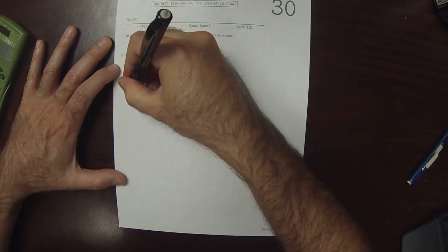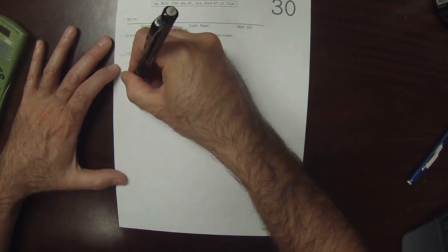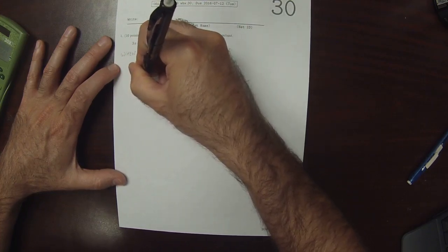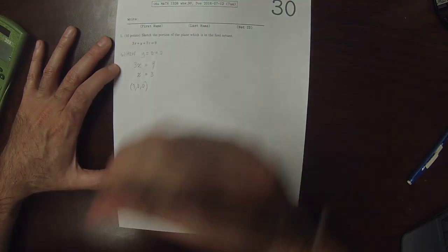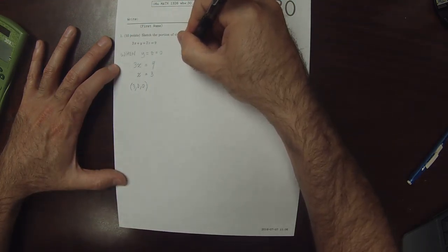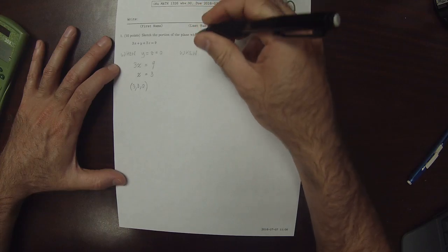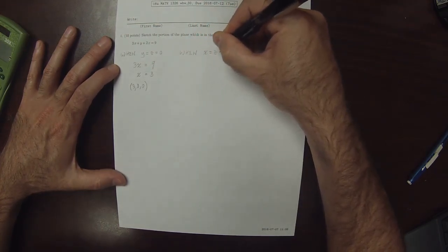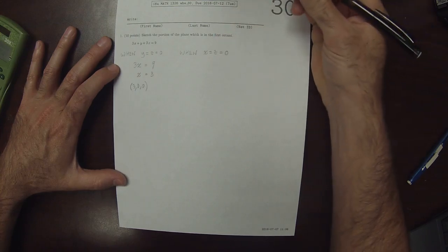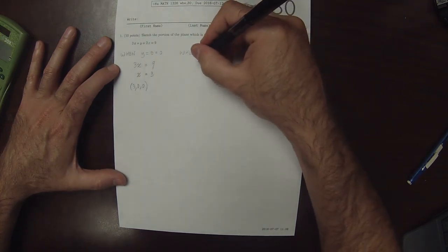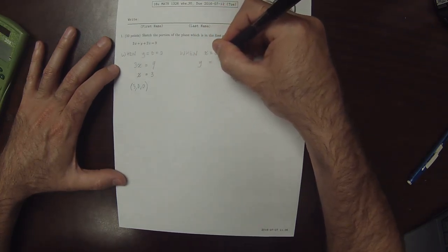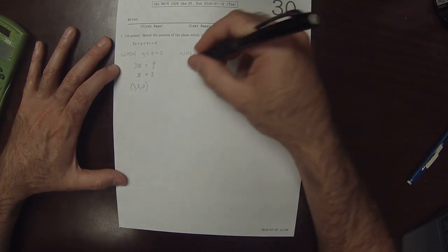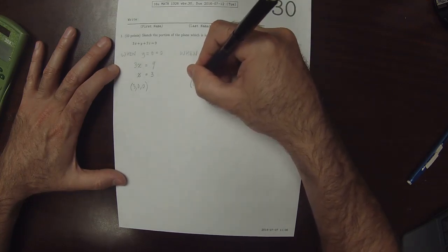That means the point (3,0,0) is on the plane. When x equals z equals 0, that means we have y equals 9, so the point (0,9,0) is on the plane.